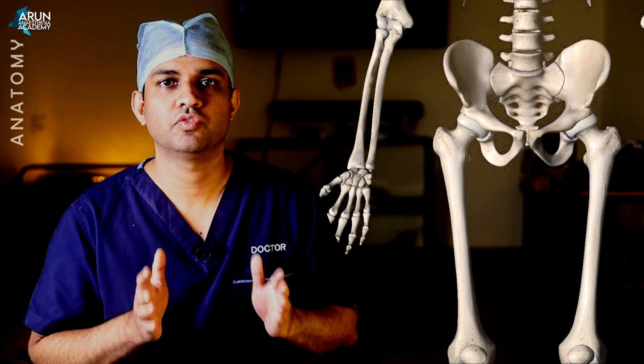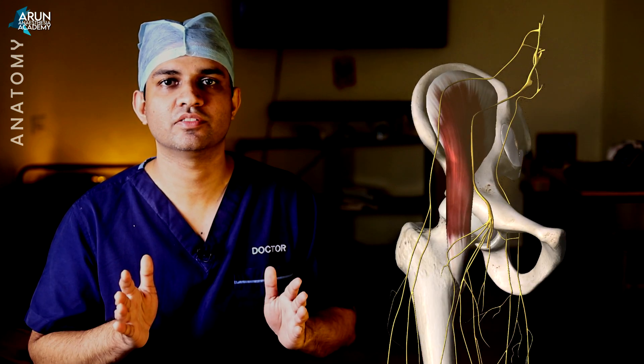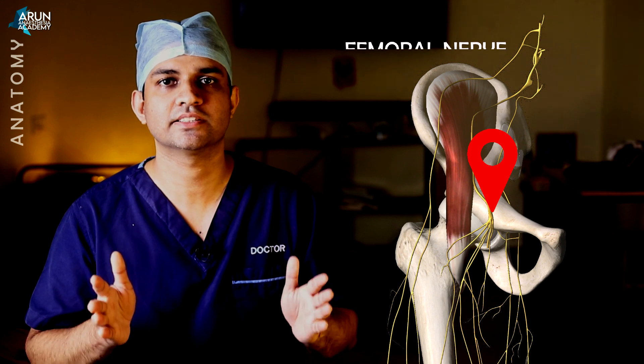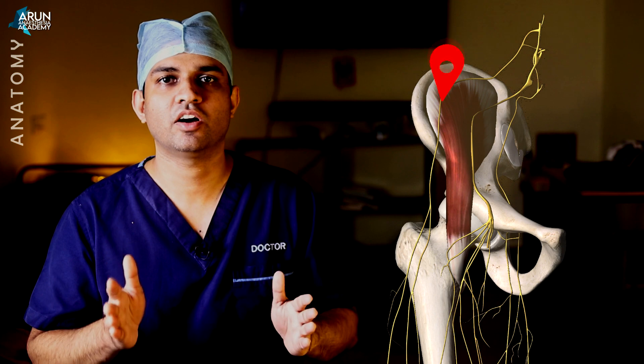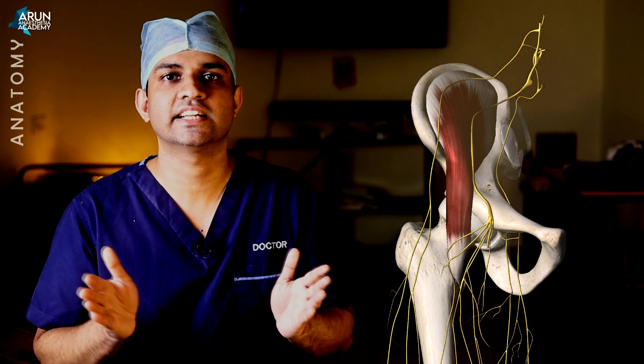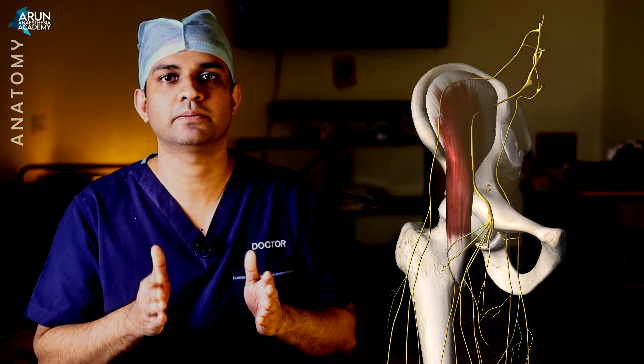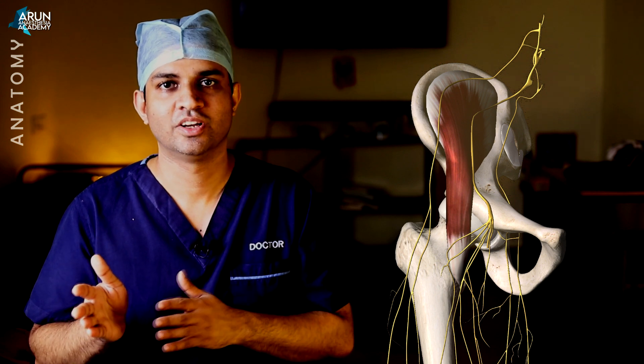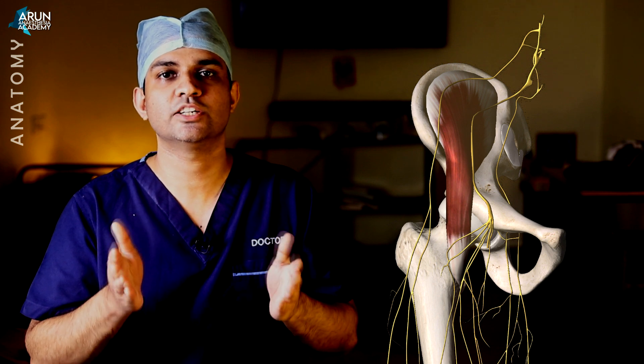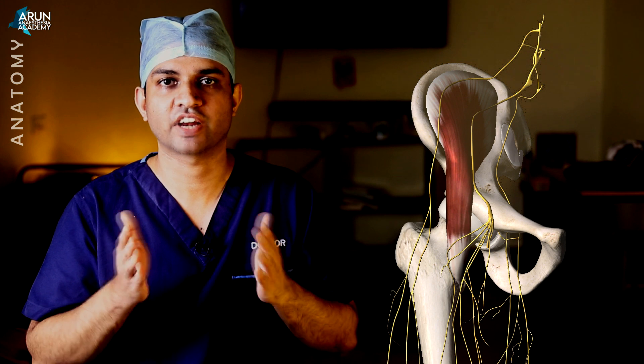What are the nerves blocked with the fascia iliaca compartment block? For the suprainguinal approach, we have four nerves which may be blocked. First is the femoral nerve, which is blocked in almost 100% of cases. The next nerve is the lateral femoral cutaneous nerve, blocked in 80 to 100% of cases. In 10% of cases there may be an anatomical anomaly where the lateral femoral cutaneous nerve is absent, in which case the lateral thigh is supplied by the femoral or iliohypogastric nerve. Compared to the infrainguinal approach, it is easier to block the lateral femoral cutaneous nerve with the suprainguinal approach.